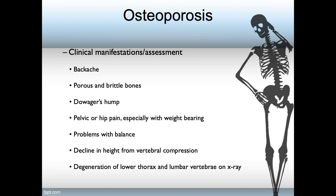As far as what to assess for: patients who are complaining of backaches, who have porous or brittle bones, the presence of a dowager's hump, lordosis, pelvic or hip pain especially with weight-bearing, problems with balance, a decline in height as a result of vertebral compression, and degeneration of the lower thorax and lumbar vertebrae on x-ray.